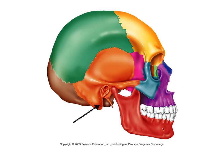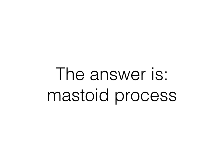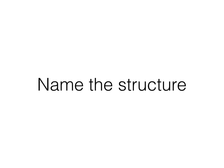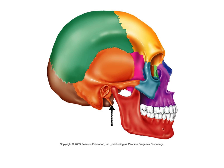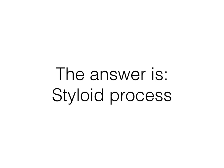What's the name of the structure? I'm not looking for the bone name here, but for that little extension coming off of that bone. That is the mastoid process. What's the name of that little pointy structure there? That's the styloid process.